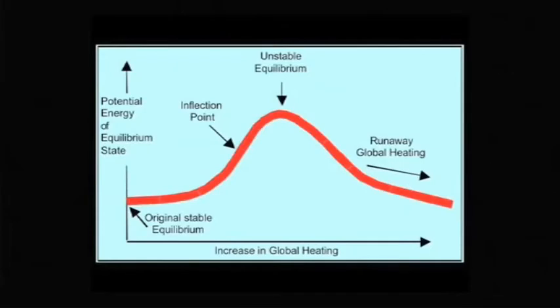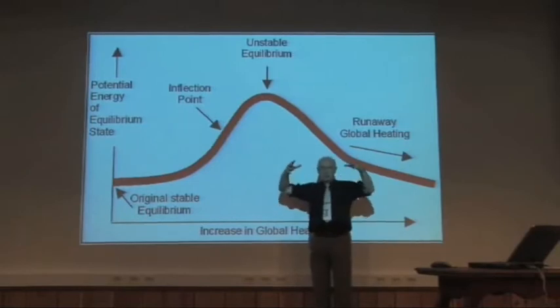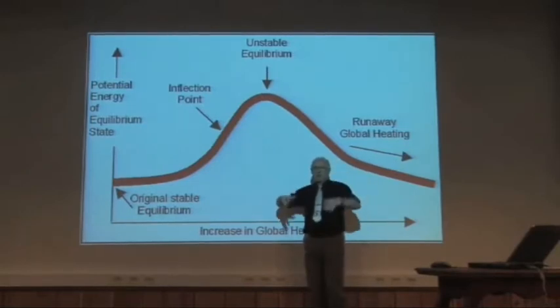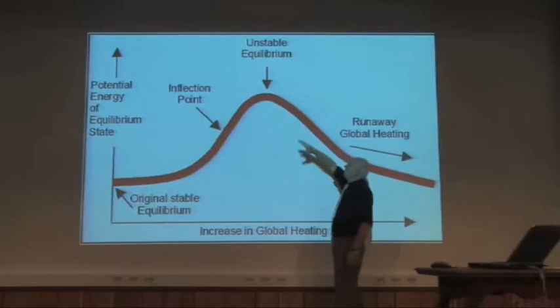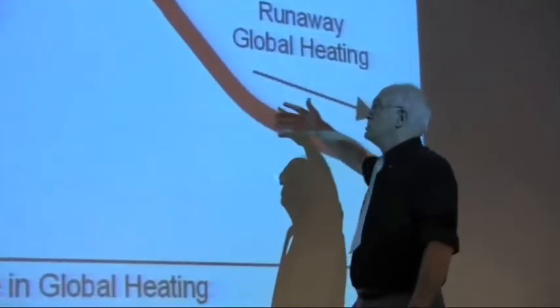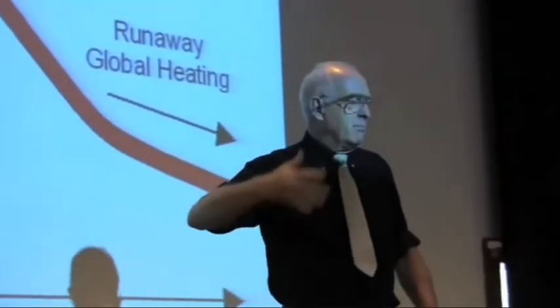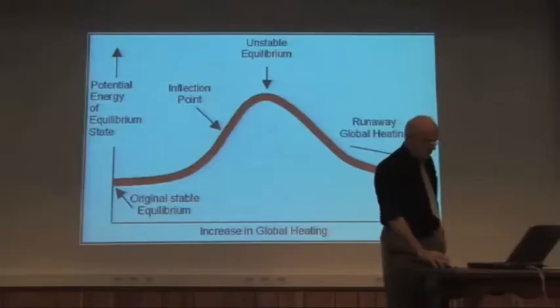Here it is. The original stable state equilibrium, the inflection point, where positive feedbacks begin to have an effect on the containment, the unstable equilibrium, where positive feedbacks and the containing damping feedbacks just balance out, and then beyond that, the accelerating feedbacks push the system towards runaway. Contained runaway, but for our purposes, in human life terms, it's runaway.